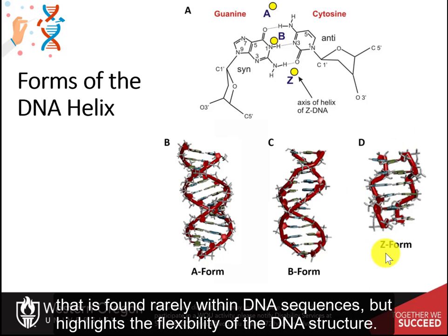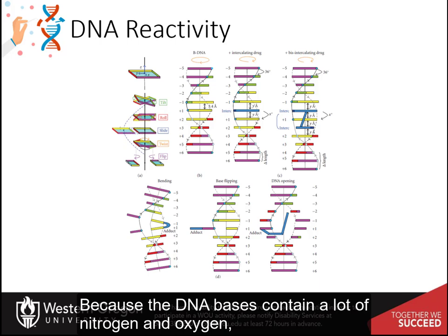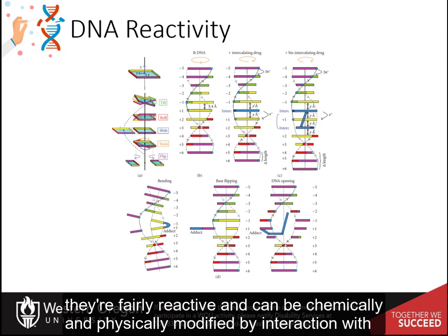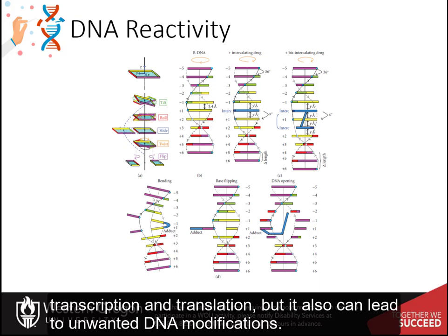Within the B-DNA structure, approximately 10 base pairs are required for one turn of the helix. Because the DNA bases contain a lot of nitrogen and oxygen, they are fairly reactive and can be chemically and physically modified by interaction with external chemicals and proteins. This can lead to the regulation of DNA processes such as transcription and translation, but it can also lead to unwanted DNA modifications.